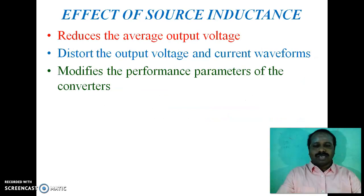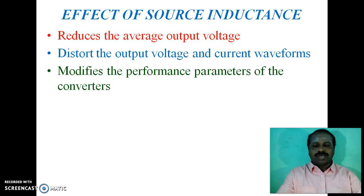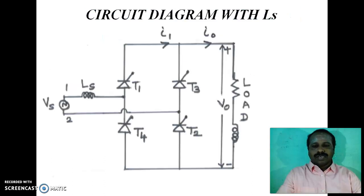Effect of source inductance: First, it reduces the average output voltage — this is the major effect on converter performance. Second, it distorts the output voltage and current waveforms. Both output voltage and current waveforms are distorted due to the source inductance. It also modifies the performance parameters of the converters. The following is the circuit diagram of a single-phase full converter with source inductance Ls, where Ls is the source inductance.